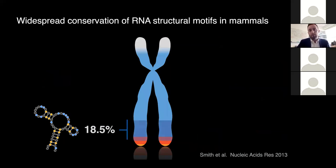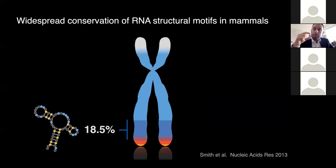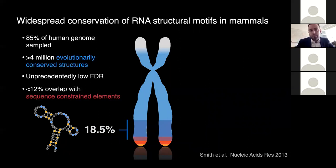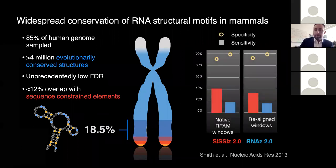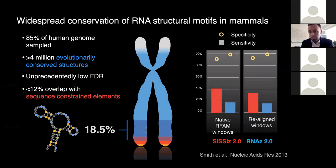I established a benchmark using known RNA structure alignments — molecules like the ribosome or tRNAs — to calibrate parameters for different classifiers. We applied this genome-wide sliding window approach and used a randomized background model to establish thresholds. When we applied this to the whole human genome across about 32 to 36 mammals, we found that about 20% of the human genome is conserved at the level of RNA structure throughout evolution, with the majority of these regions falling outside known sequence-conserved regions.